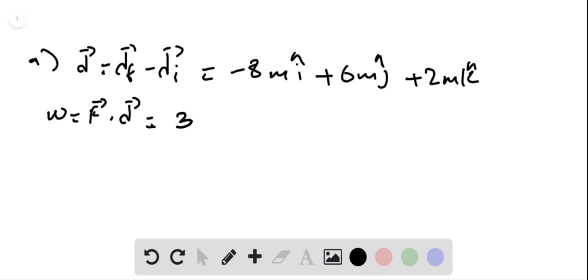This gives us 3 times minus 8 plus 7 times 6 plus 7 times 2. The work done will be equal to 32 joules.